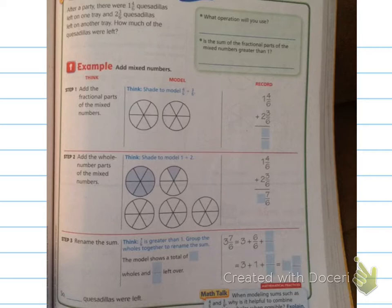Step one is to add the fractional parts of the mixed number. It says shade to model 4/6. Alright, there's my 4/6. And 3/6. So I'm going to do 1, 2, 3. So how many sixths do I have shaded in? 1, 2, 3, 4, 5, 6, 7. I have 7/6 shaded in.